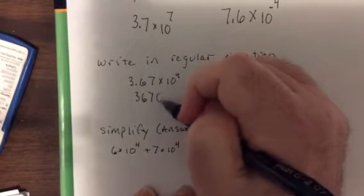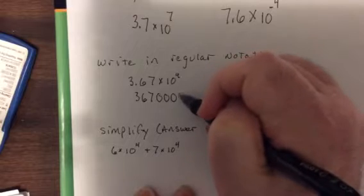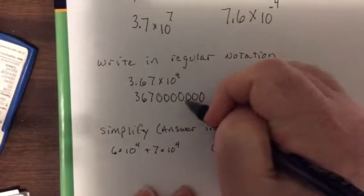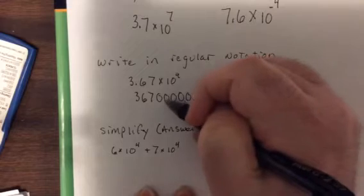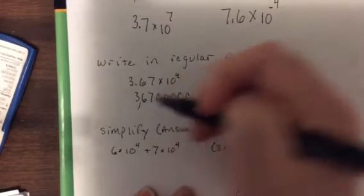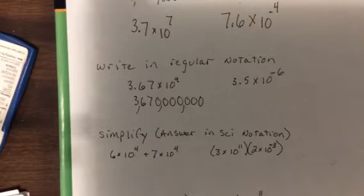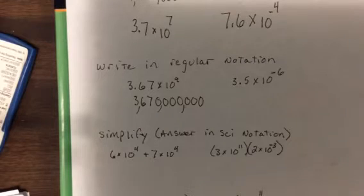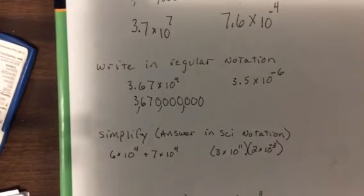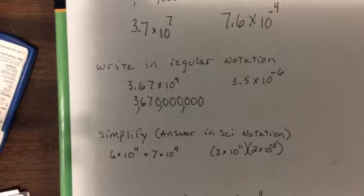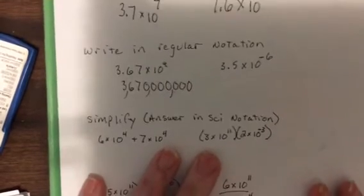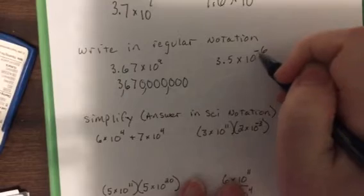Now let's change this to regular notation. So we had 3.67 times 10 to the 9th. You move it twice so two of the nines are gone, you still got seven more. Really big number, you're talking about outer space, you're talking about the government.